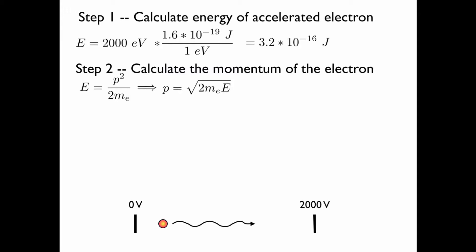We rearrange this to get an expression for p. Here m_e is the mass of the electron, and E is its kinetic energy. If we plug in the values, we obtain our result for the momentum.